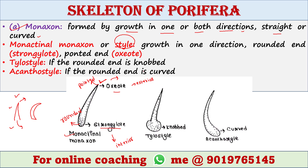Next is tylostyle. If the rounded end is knobbed, the spicule is called tylostyle. And if the rounded end is curved, the spicule is called acanthostyle. These are the different types of monactinal monaxone, which come under monaxon.